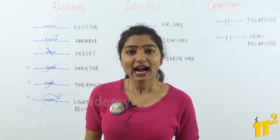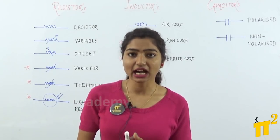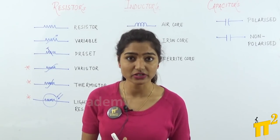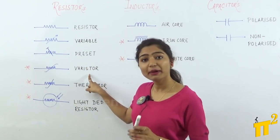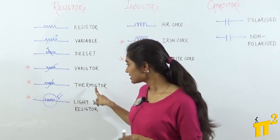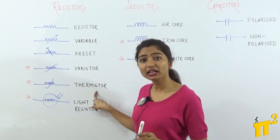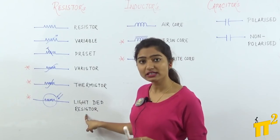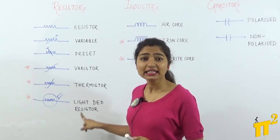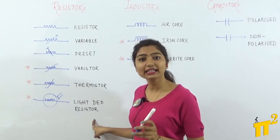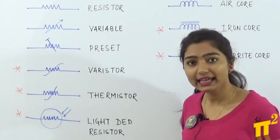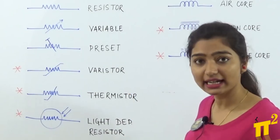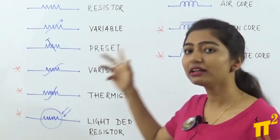The next category is dependent resistors. The first one is a varistor, depending on voltage. The second is a thermistor, depending on temperature, and the third is light dependent resistors, also known as LDRs, depending on light. So a quick recap: dependent resistors depend on voltage, temperature and light, and these are the independent resistors.